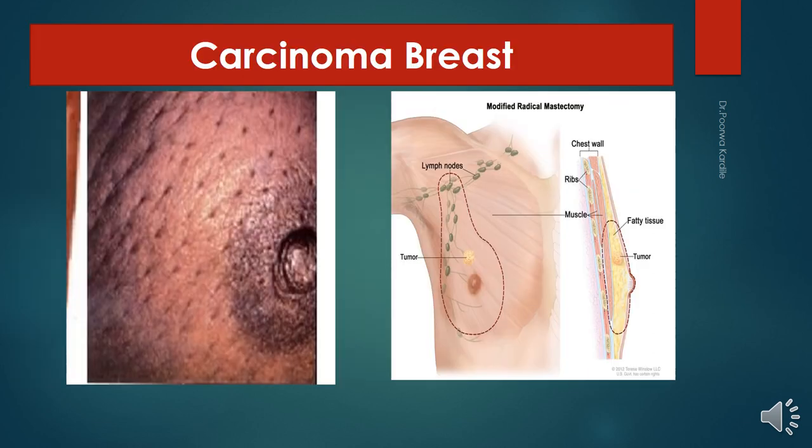This slide is of carcinoma of the breast. The upper outer quadrant is the most frequent site of carcinoma. Cancer cells infiltrate the suspensory ligament, so the breast becomes fixed and immobile. Contraction of the ligament causes retraction or puckering of the skin.